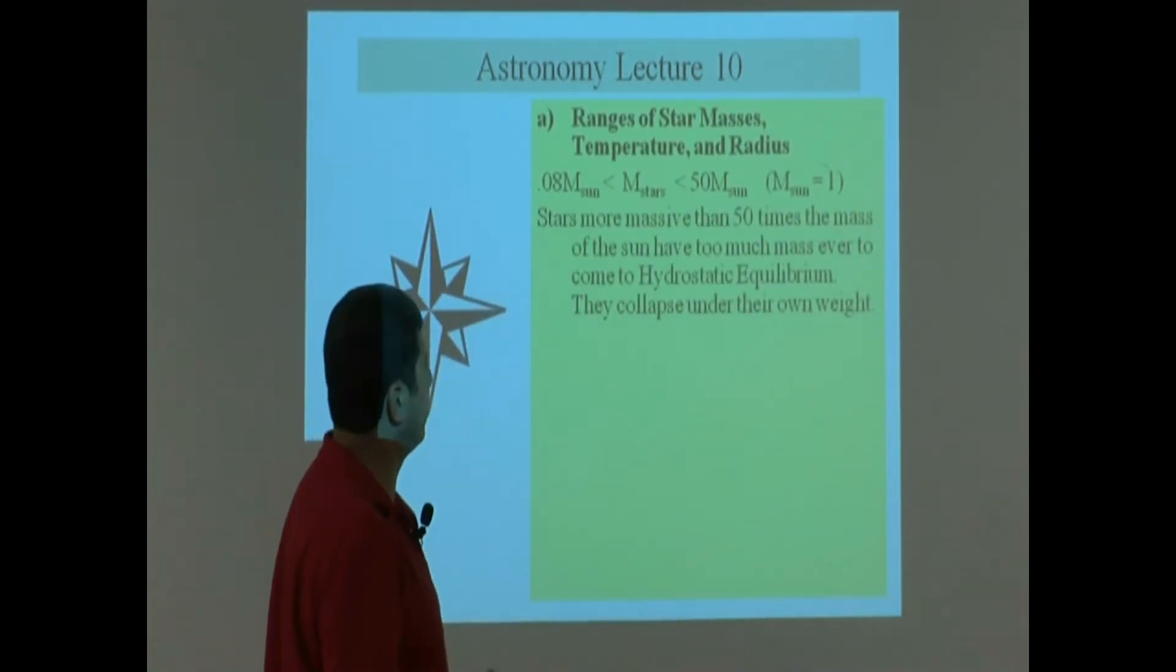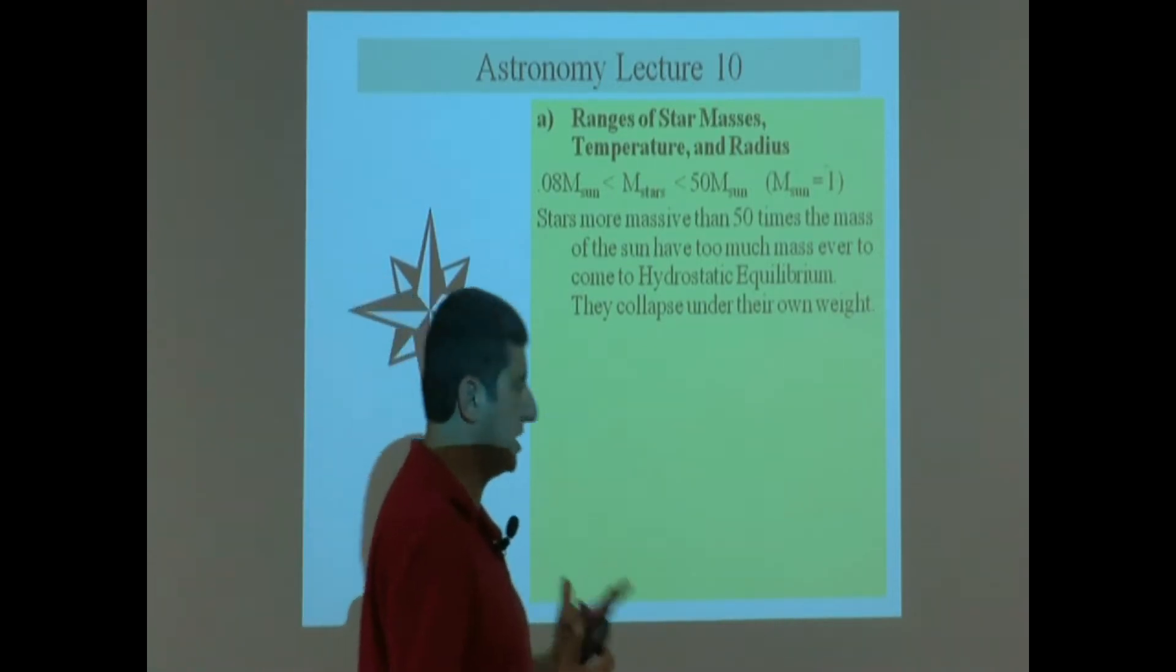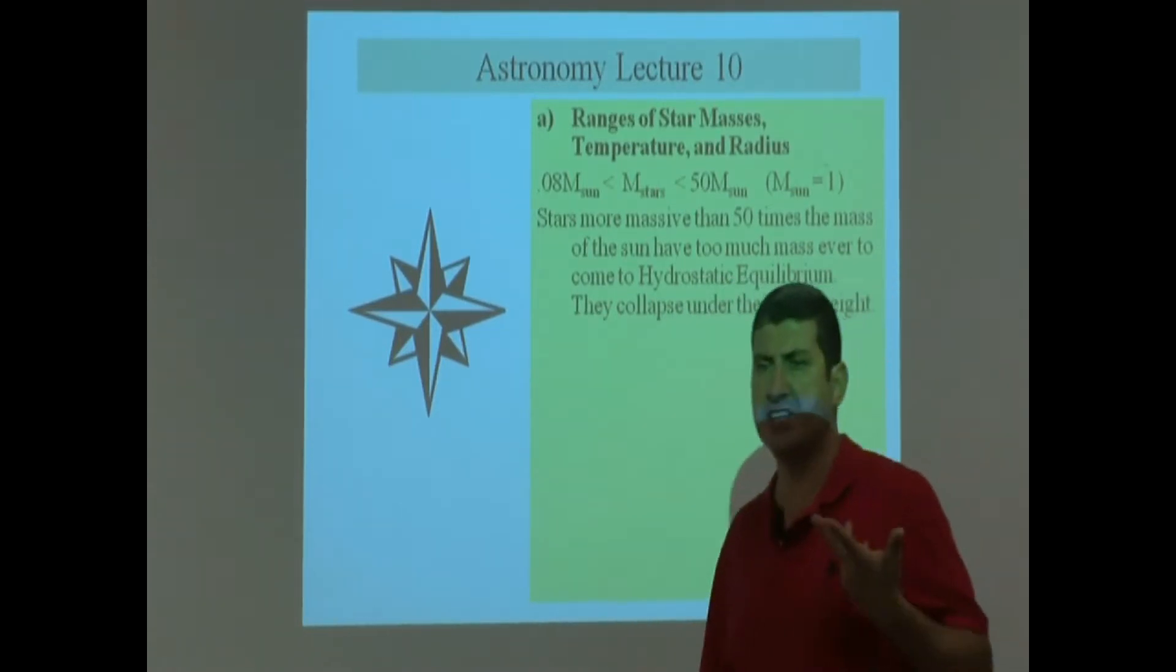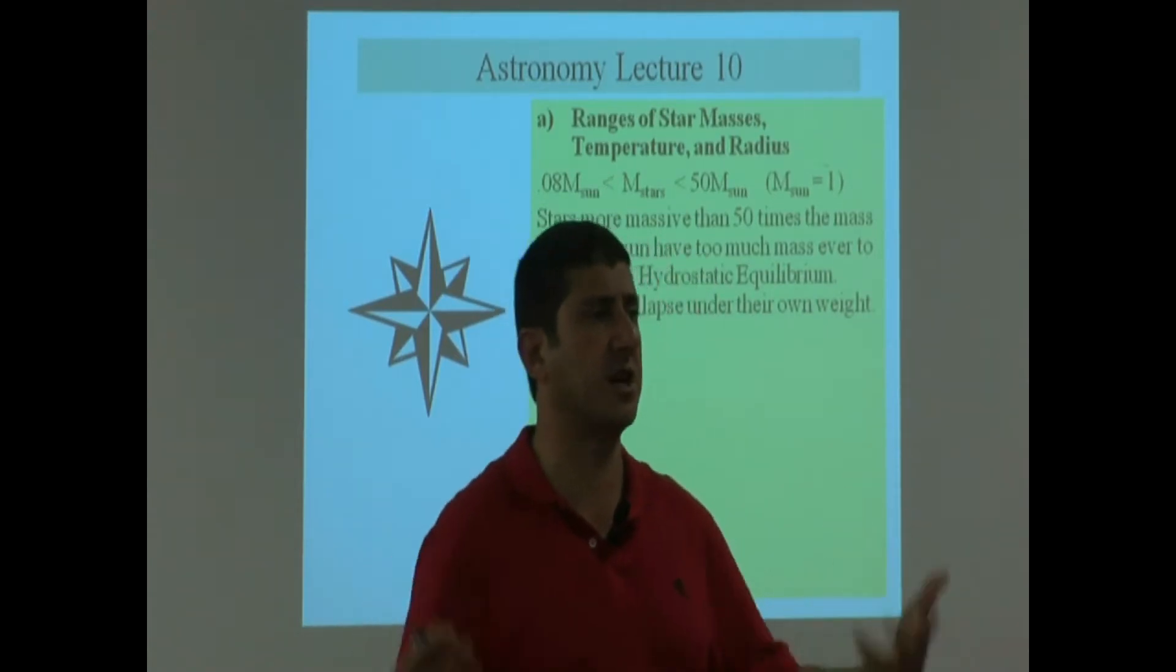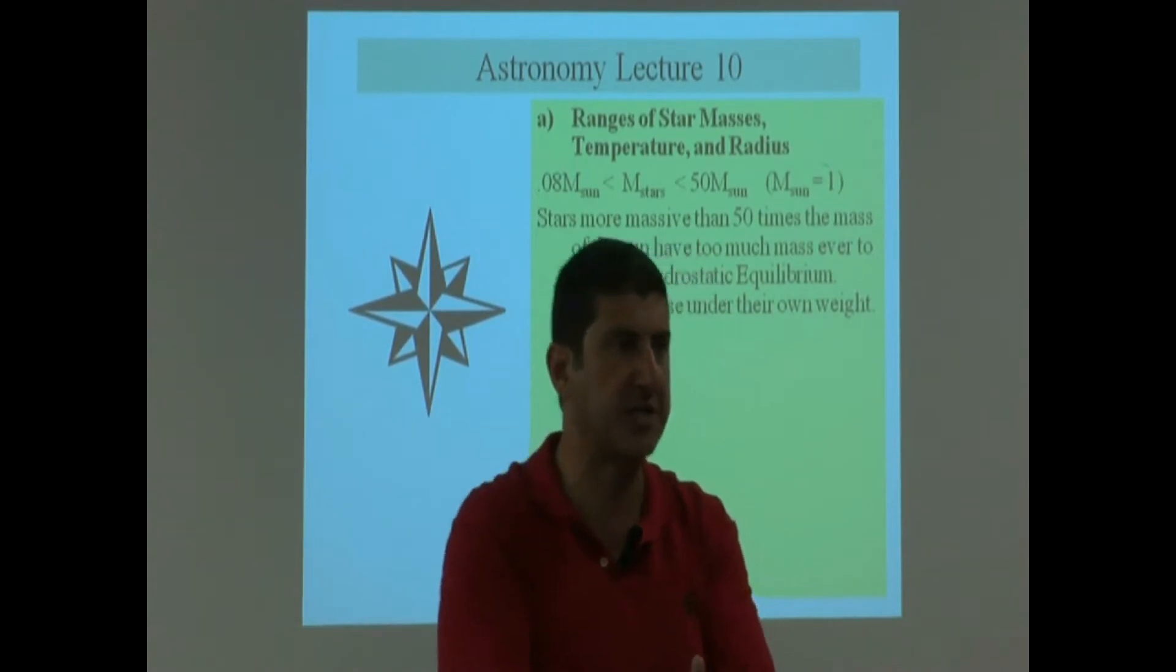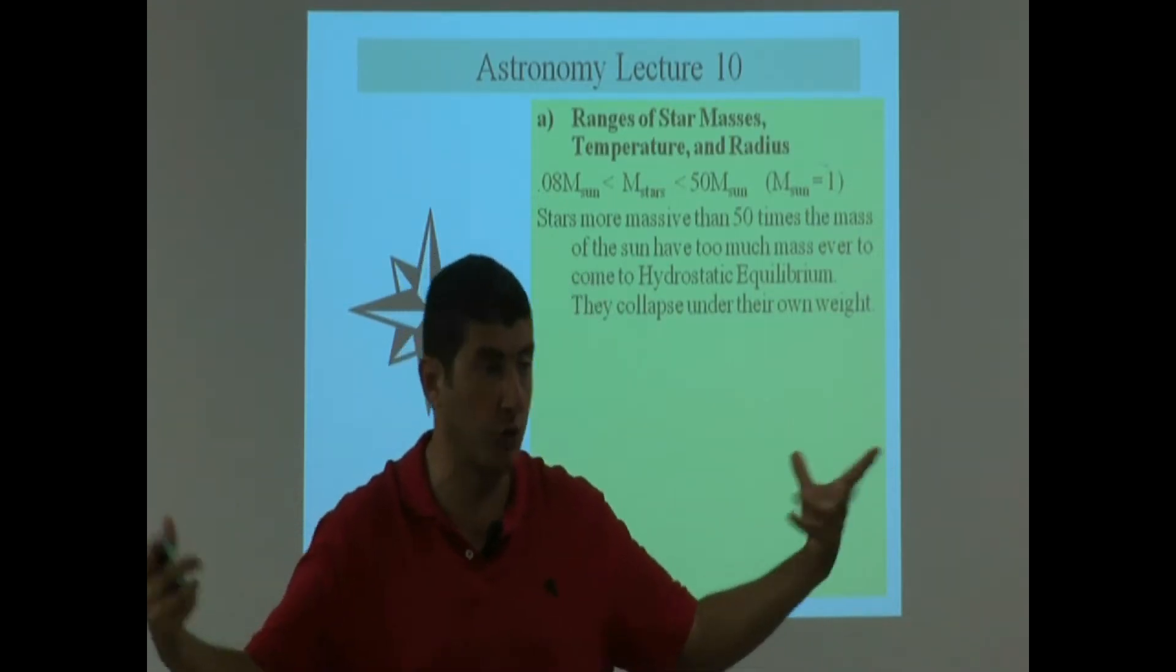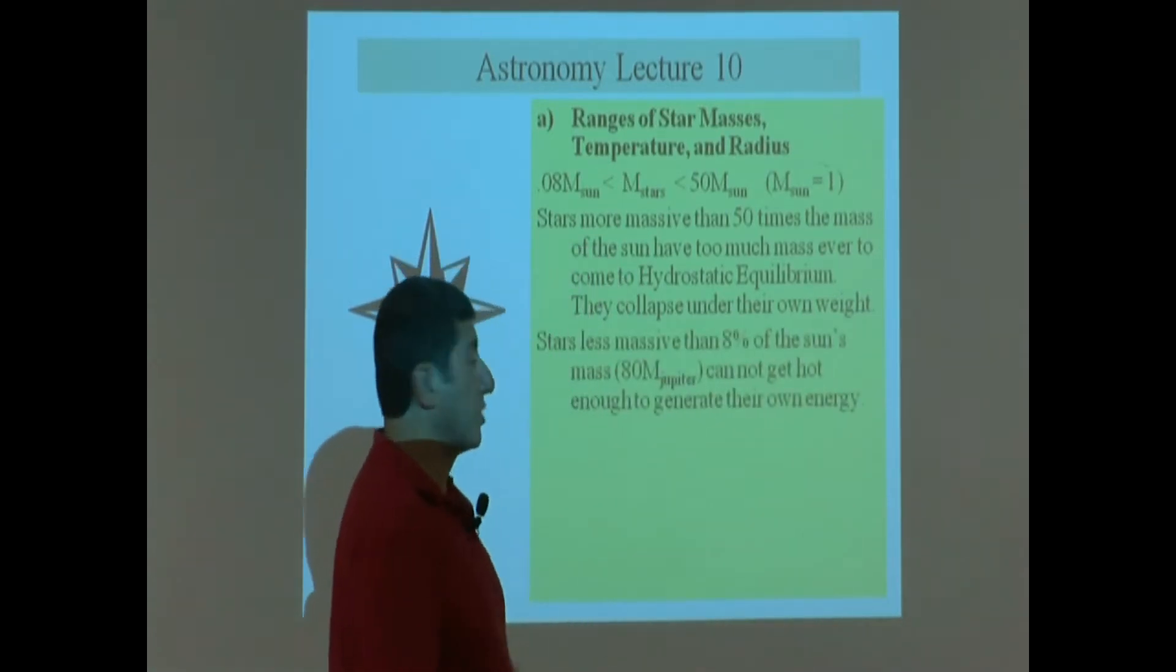Stars more massive than 50 times the mass of the Sun have too much mass ever to come to hydrostatic equilibrium. So you might ask yourself, why is there an upper limit? Why is there a maximum to how heavy a star can be? Well, if the star is too heavy, it has too much gravity, and it's just going to collapse itself, and it's not going to form a hydrostatic equilibrium. It's not going to form a stable star. So you can't have it being too heavy. They collapse under their own weight.